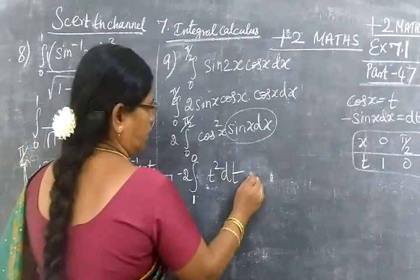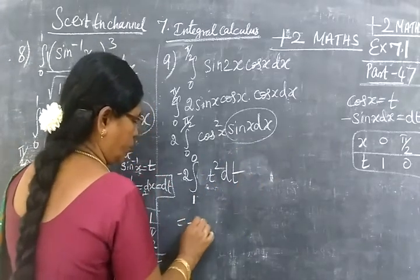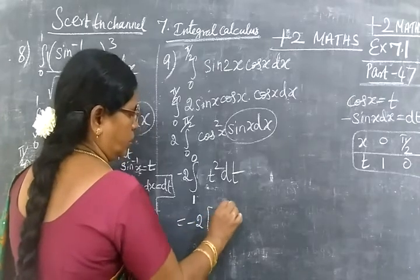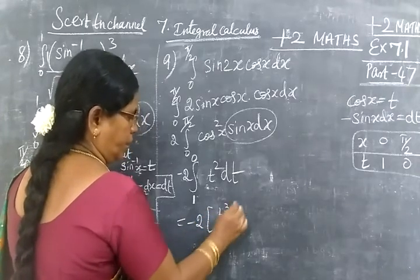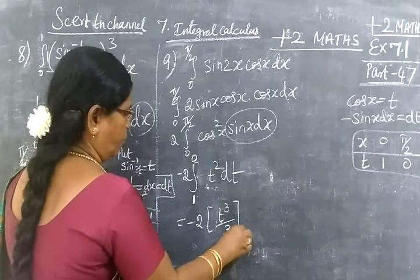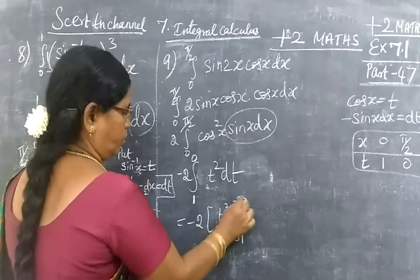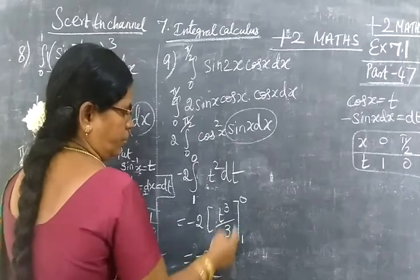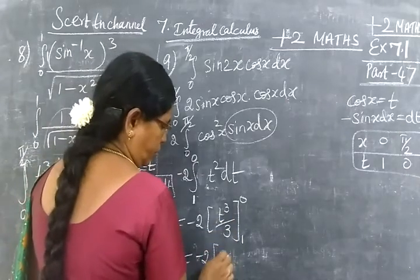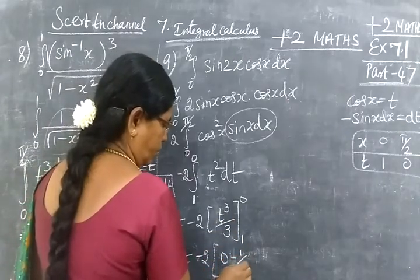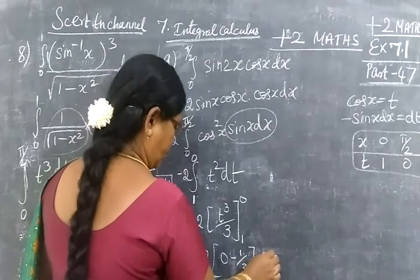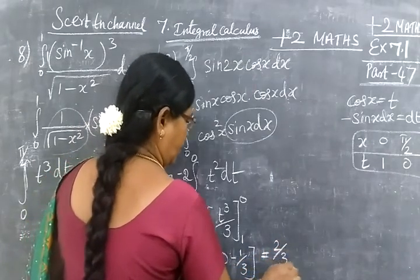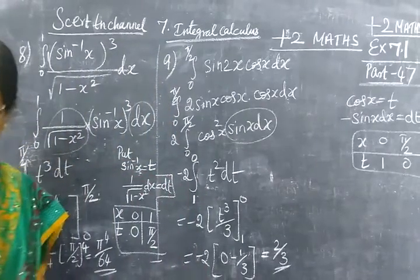The integral of t² is minus 2 times t³/3, limit 1 to 0. Minus 2 times (upper limit minus lower limit): 0³ minus 1/3. So minus minus is plus, and the answer is 2/3.